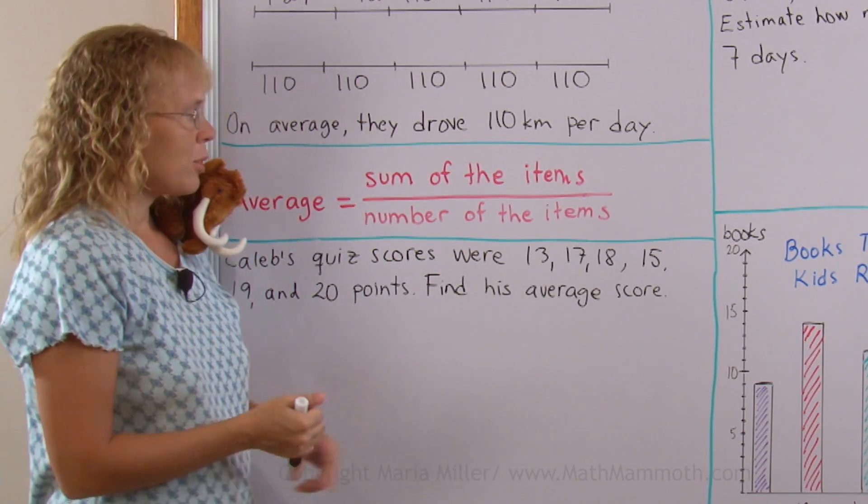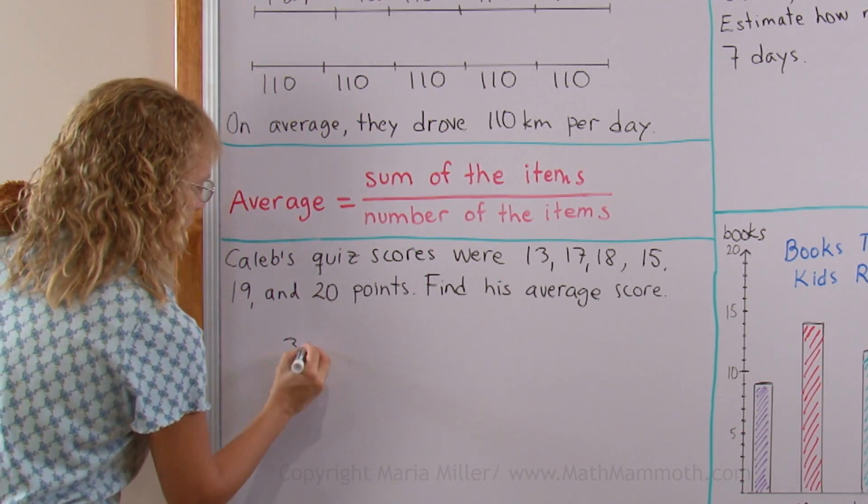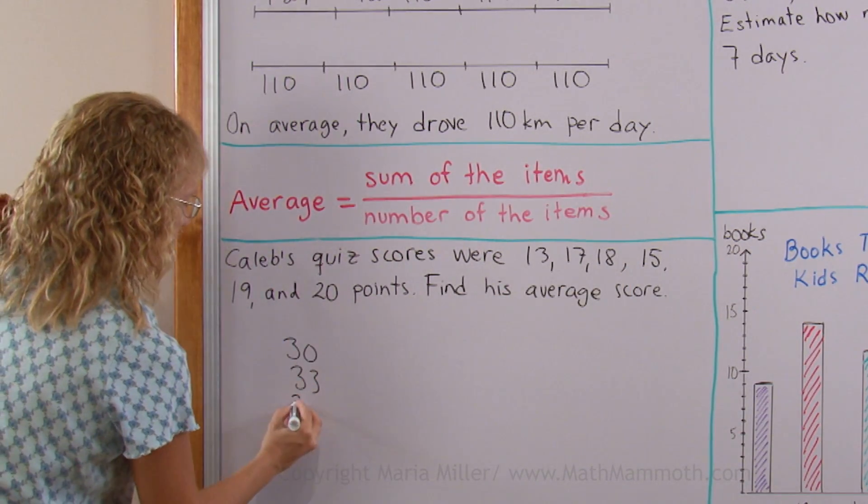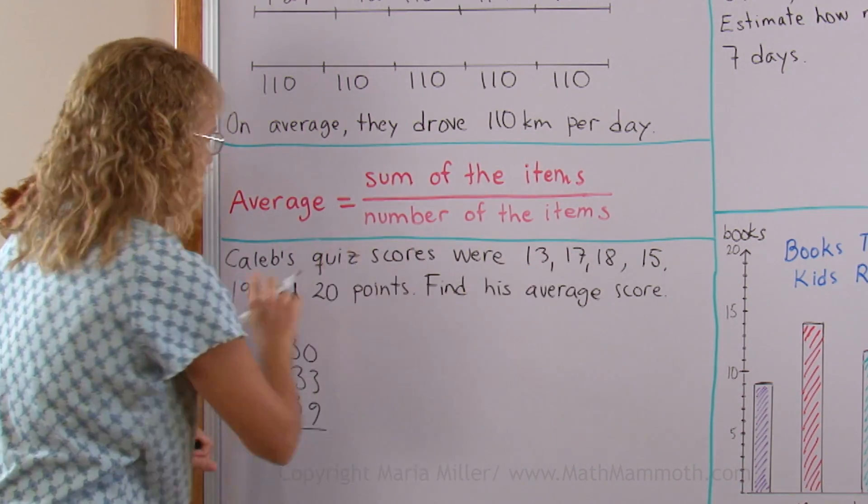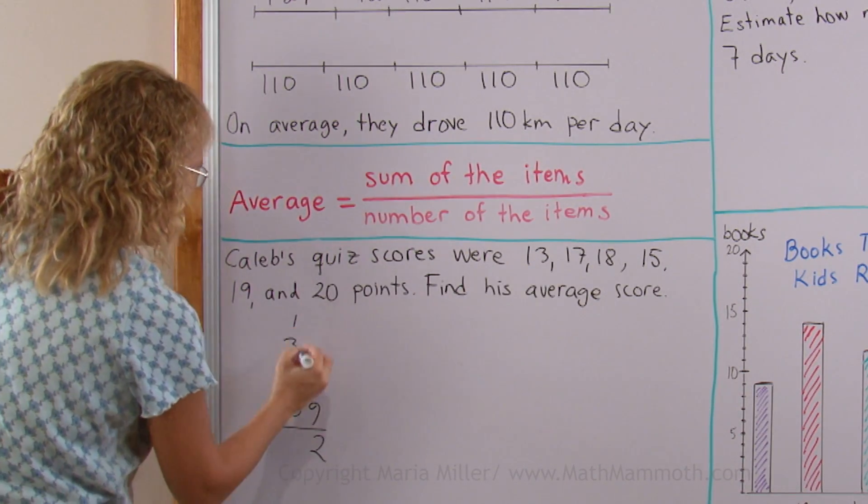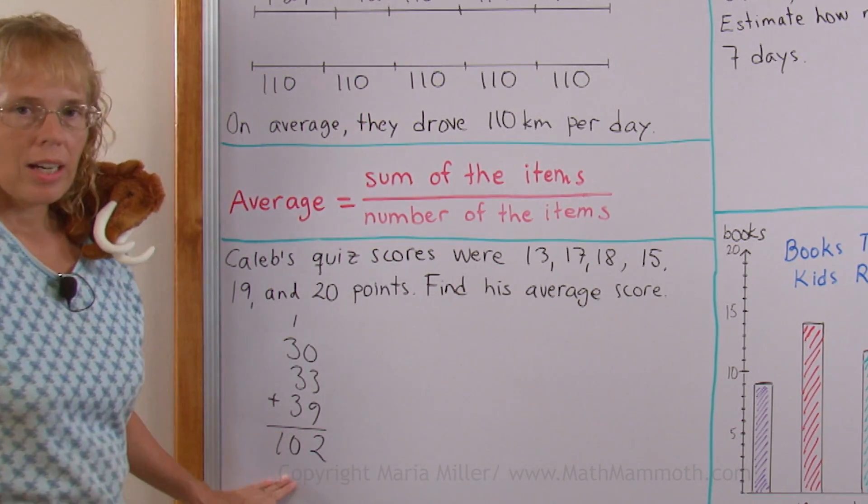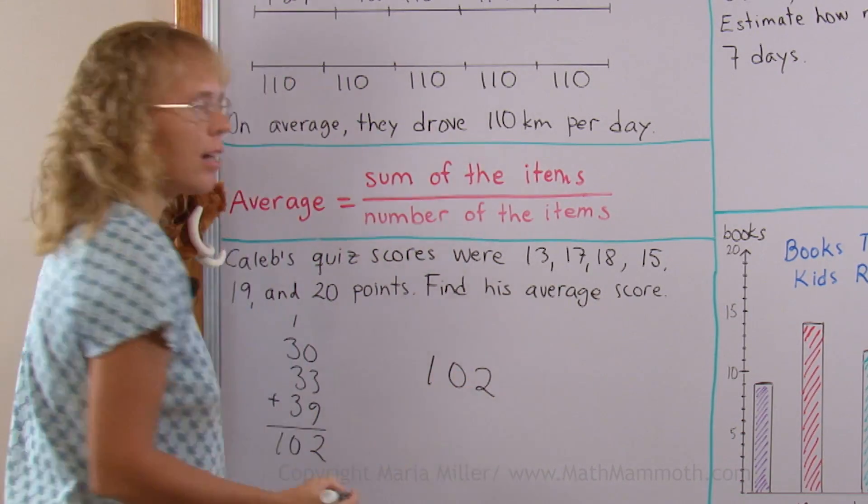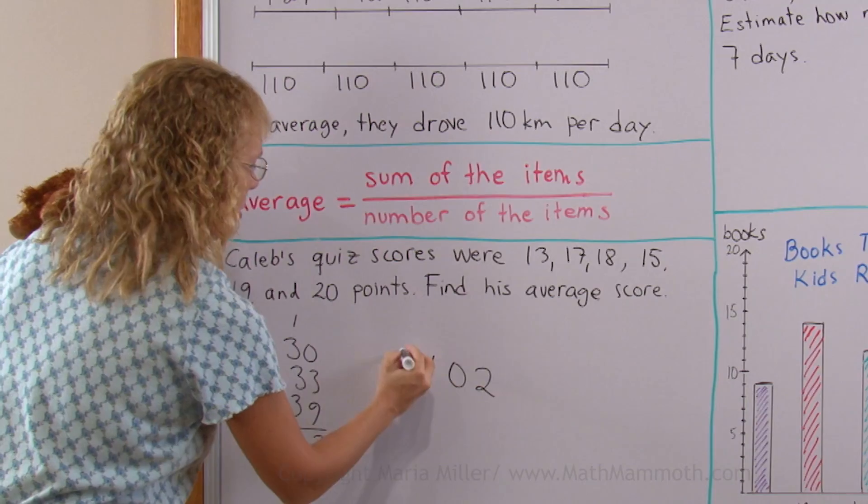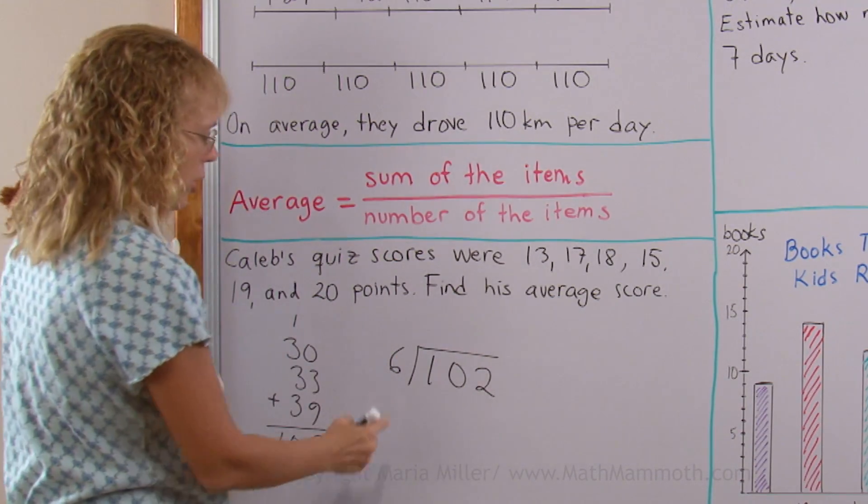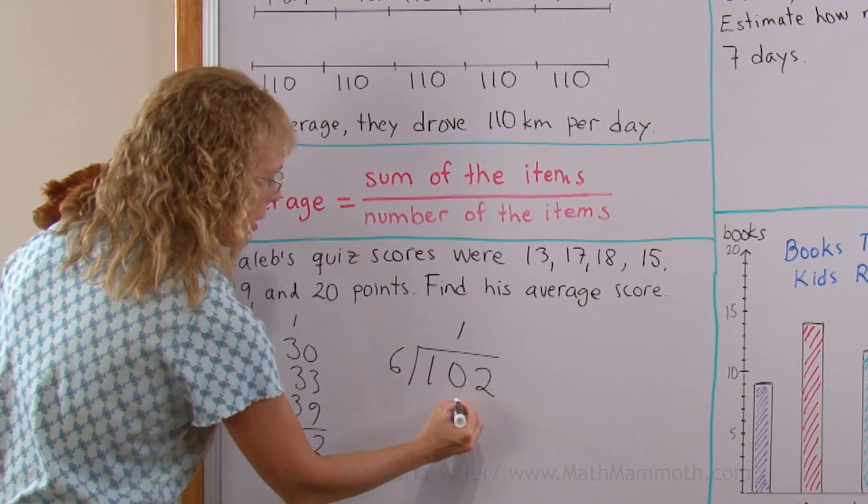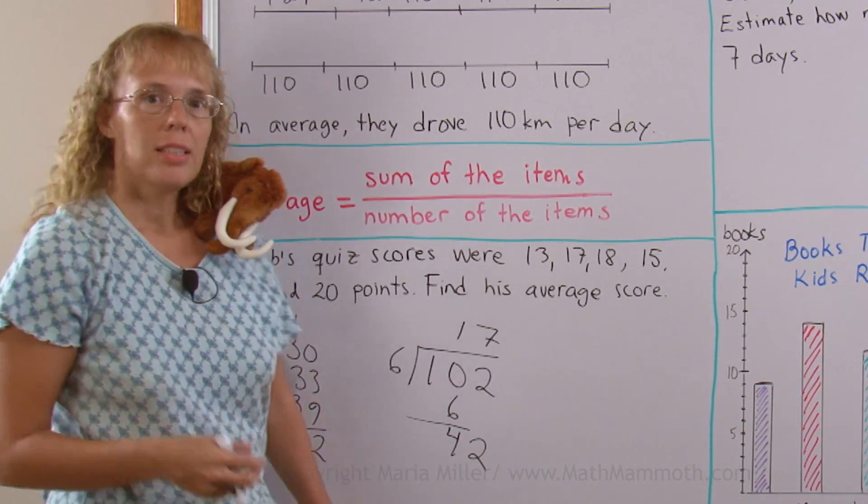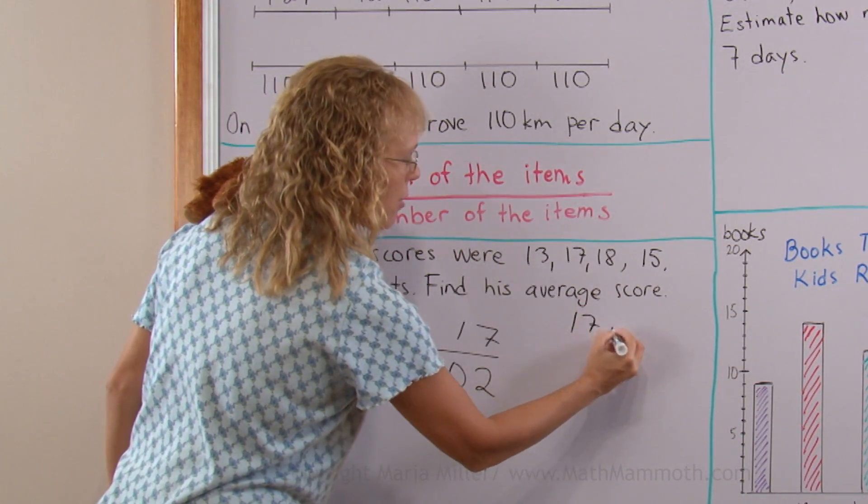So let's add these numbers. We have 13 and 17 which is 30. I'm adding those two. 18 and 15 is 33. 19 and 20 is 39. Okay? So I'm adding all these 6 numbers this way. Here's 12 and there's 10. 102. Now we need to divide that by how many numbers I had. I had 6 numbers, right? Now use long division. 6 goes to 10 one time. 1 times 6, 6 and subtract. 6 goes to 42 seven times and that's even division. So the average is 17 points. That's the final answer.